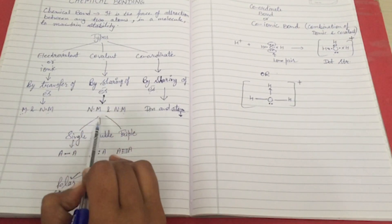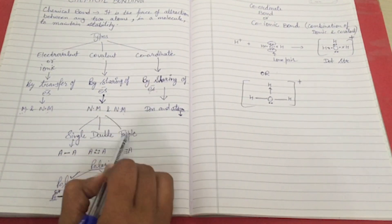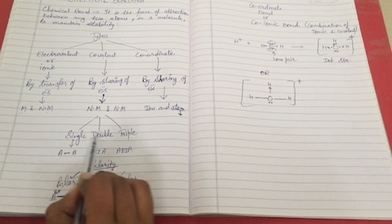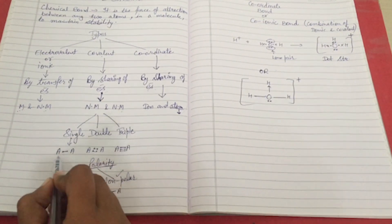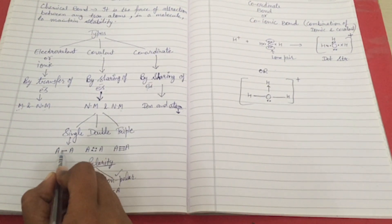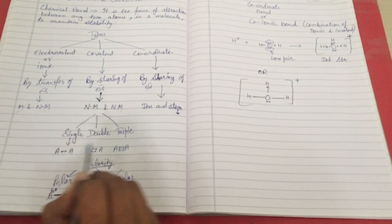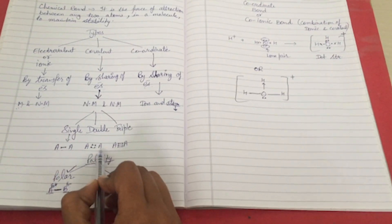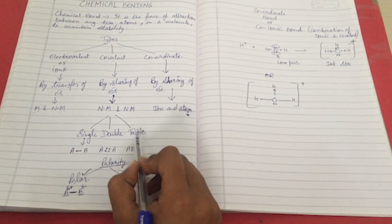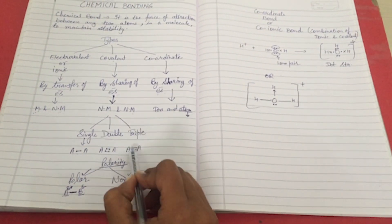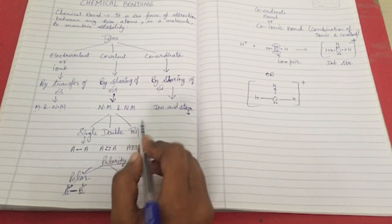Covalent compounds are further divided into three categories: single, double, and triple. In single, each atom provides one electron for sharing. In double, each atom provides two electrons for sharing. And in triple, each atom provides three electrons for sharing.